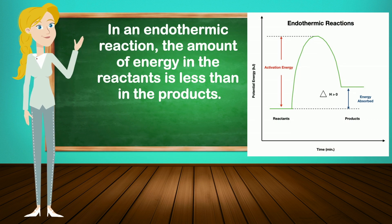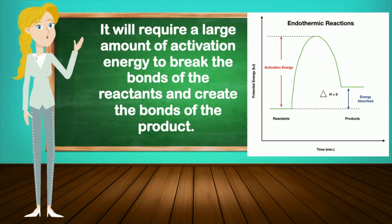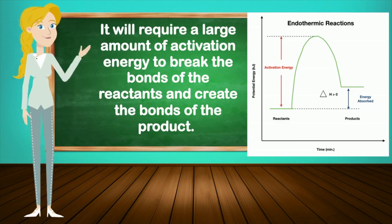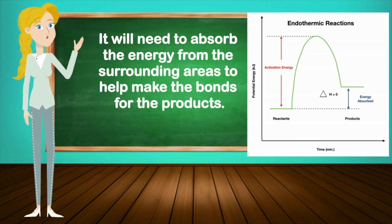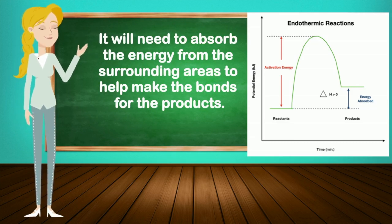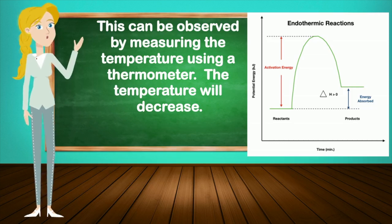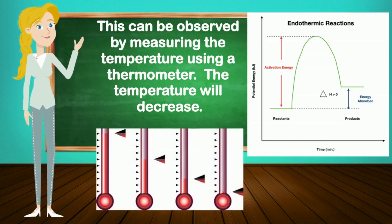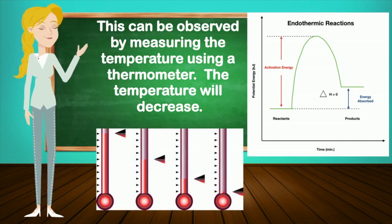In an endothermic reaction, the amount of energy in the reactants is less than in the products. It will require a large amount of activation energy to break the bonds of the reactants and create the bonds of the product. It will need to absorb the energy from the surrounding areas to help make the bonds for the products. This can be observed by measuring the temperature using a thermometer — this time, the temperature will decrease.